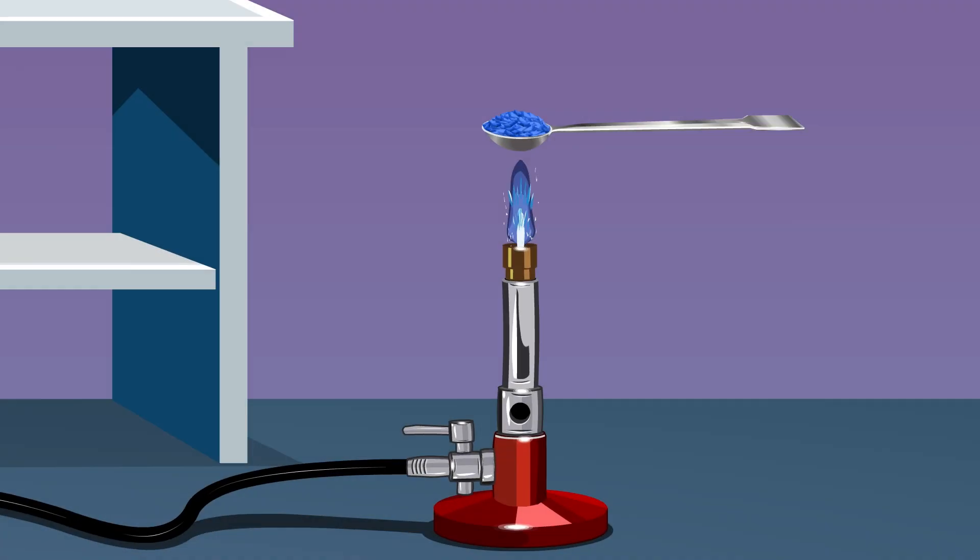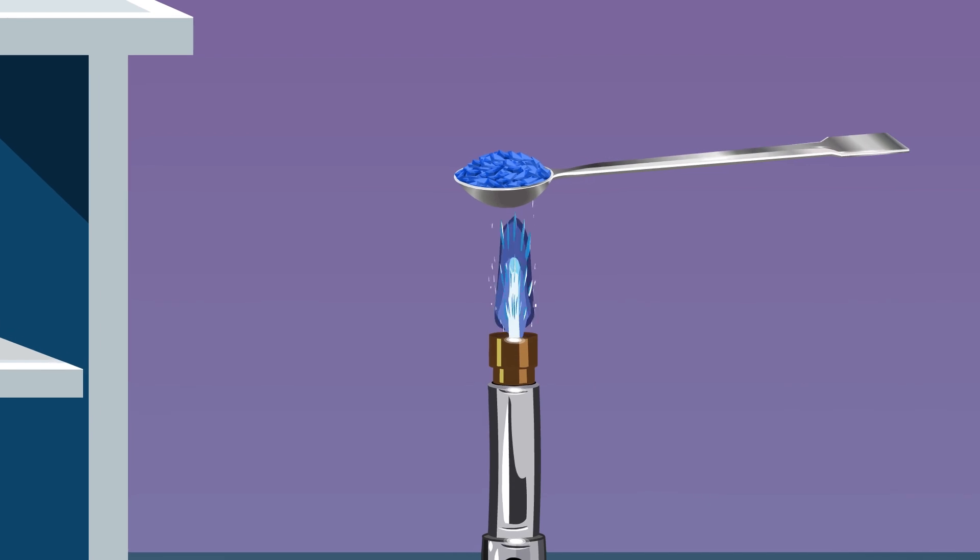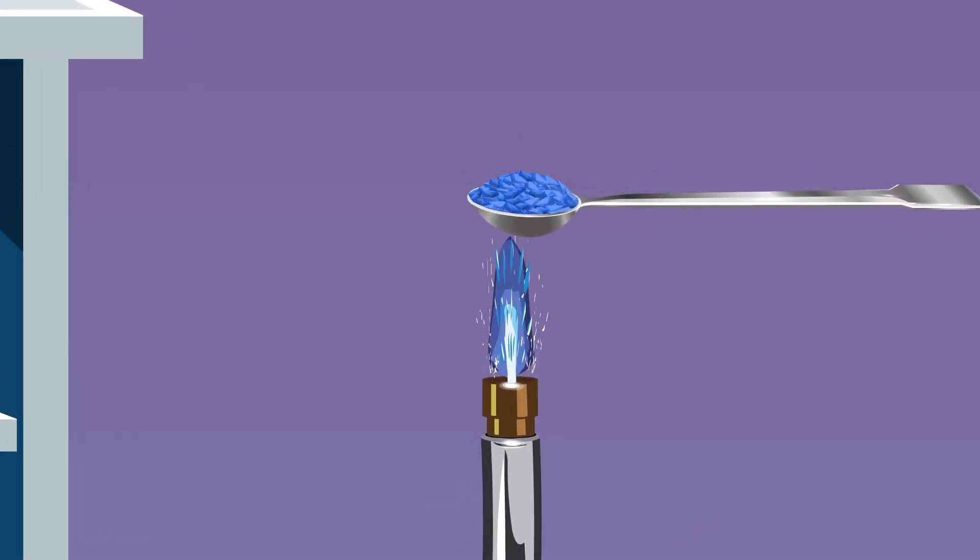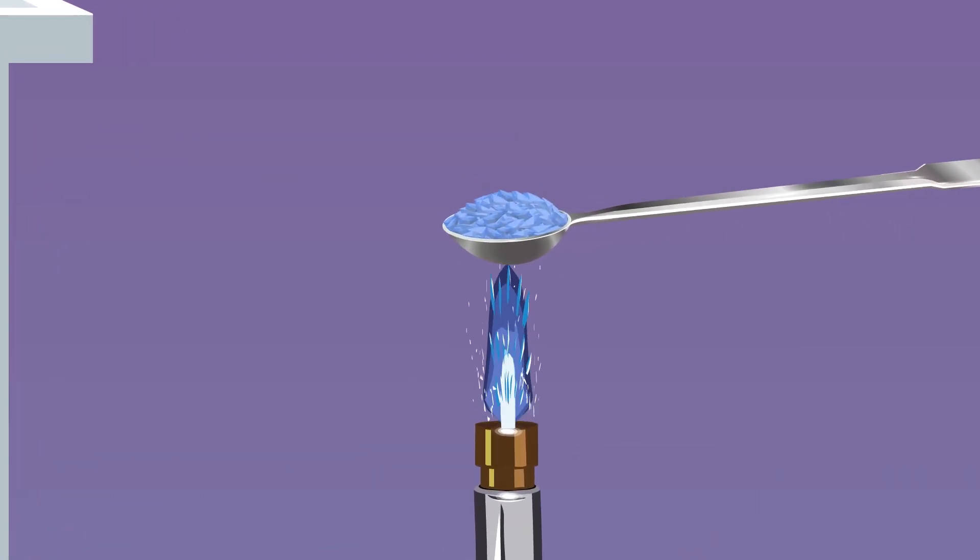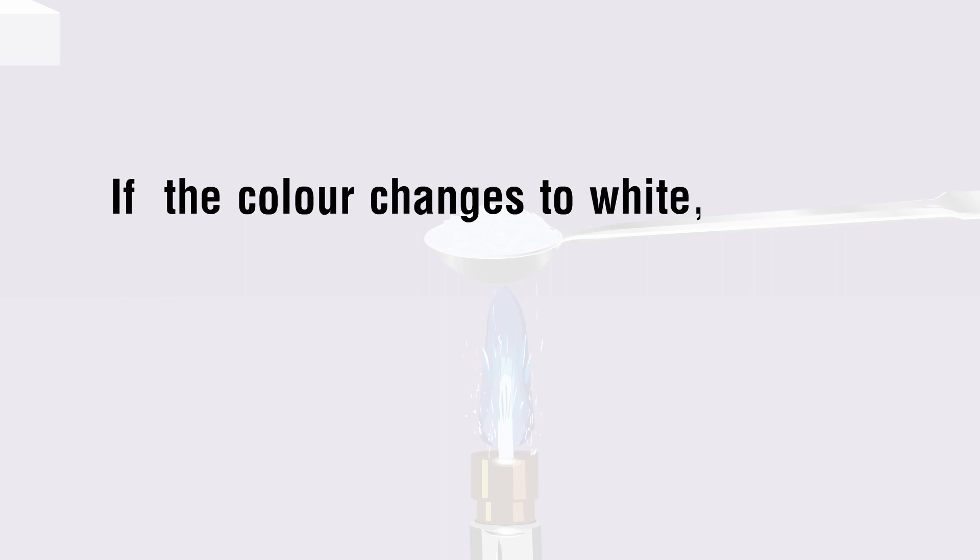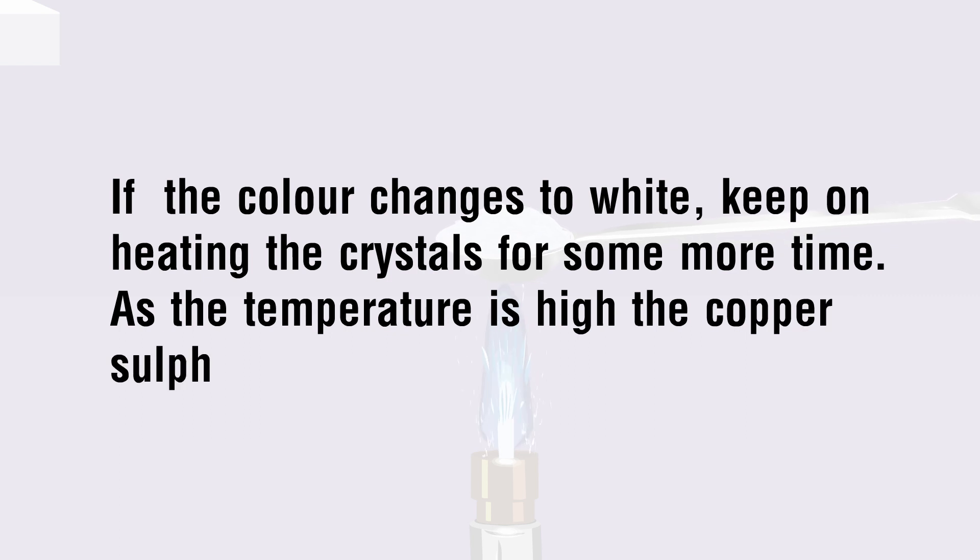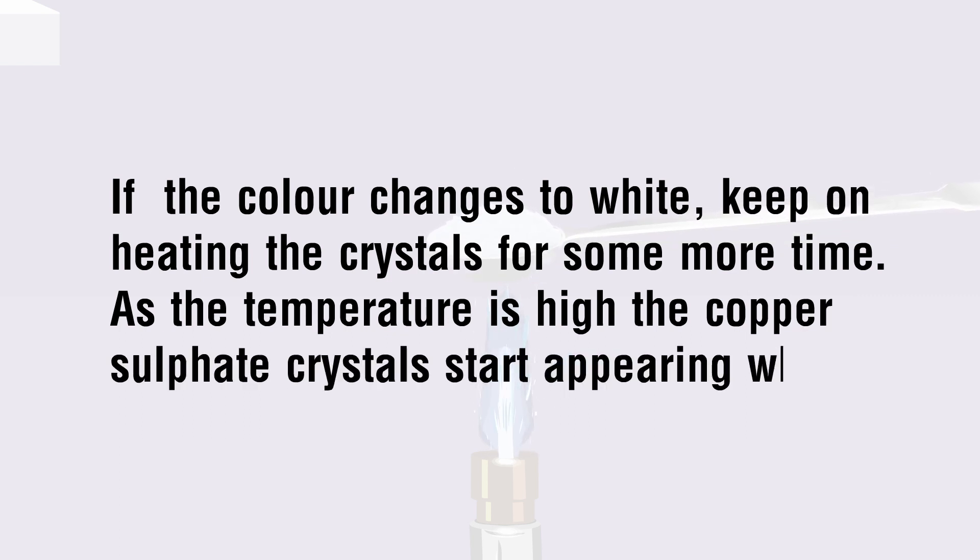Heat these crystals on a burner by keeping the spatula directly over the flame. Notice the change in color of the copper sulfate crystals—they change to white during heating. If the color changes to white, keep on heating the crystals for some more time. As the temperature is high, the copper sulfate crystals start appearing white.